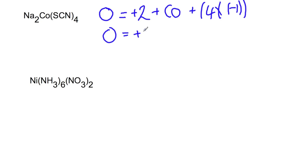So we have plus two plus the cobalt minus four. So the cobalt is equal to an oxidation state of plus two.